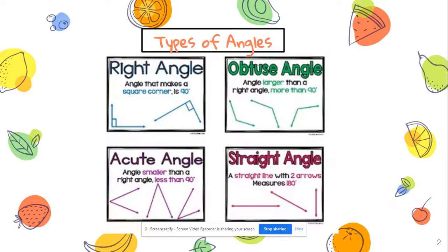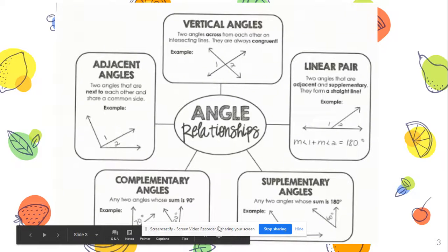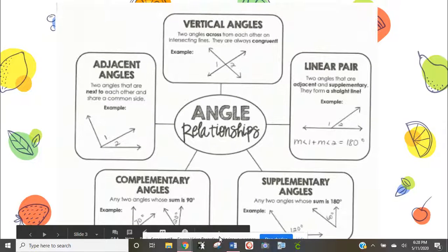Lastly we have a straight angle, which is basically just a straight line, and these measure 180 degrees. Now that we've talked about what one angle is, we're going to talk about what angle relationships are. Angle relationships always involve multiple angles.